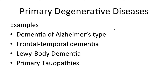There are several primary degenerative diseases, such as dementia of Alzheimer's type, frontotemporal dementia (FTD), Lewy body dementia, and primary tauopathies — a class of neurodegenerative diseases associated with pathological aggregation of tau protein — which includes progressive supranuclear palsy and cortical basal degeneration. It's important to remember that there's no real definitive diagnosis such as Alzheimer's disease confirmed during life; it is confirmed on autopsy, and is otherwise indicated as possible or probable.